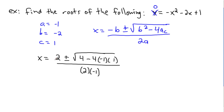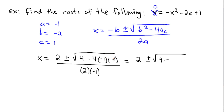Continuing the substitution: we need 4ac, where a is negative 1 and c is 1. So 1 times negative 1 gives negative 1, and negative 1 times negative 4 gives positive 4. The denominator is 2 times a, which is 2 times negative 1, giving negative 2. So far I have x equals 2 plus or minus the square root of something, over negative 2.